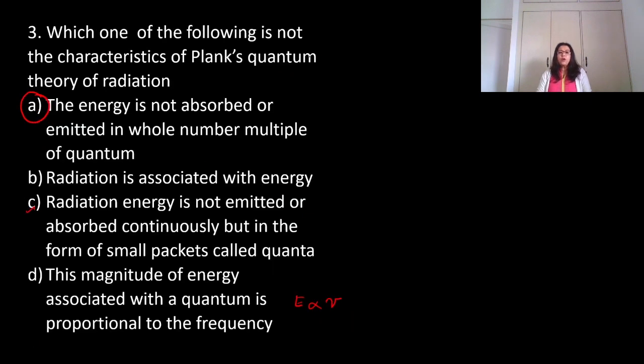Next: Which one of the following is not a characteristic of Planck's quantum theory of radiation? Planck's quantum theory says the energy emitted or absorbed is directly proportional to frequency or inversely proportional to lambda. Energy is not absorbed or emitted in whole number multiples of quantum - this is not a characteristic. The others - radiation is associated with energy, radiation energy is emitted in small packets of quanta, magnitude of energy is proportional to frequency - all are part of Planck's theory.